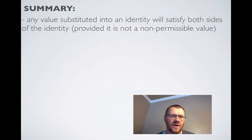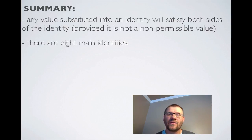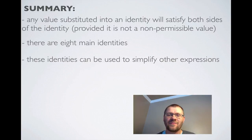In summary, any value substituted into an identity will satisfy both sides of the identity, provided it is not a non-permissible value. Secondly, we know that there are 8 main identities. There are quotient identities, reciprocal identities, and Pythagorean identities. Your best bet is to have them in one place, maybe on a recipe card, so you can easily access those. These identities can be used to simplify other expressions. Your assignment's on pages 296 to 298. Give a couple questions a try, and we'll see you in class tomorrow.